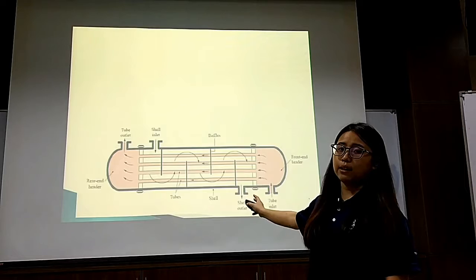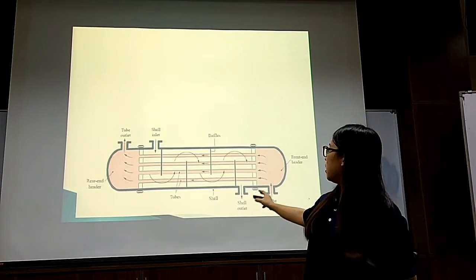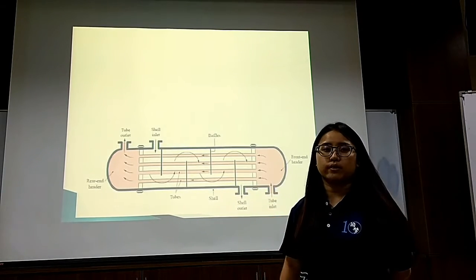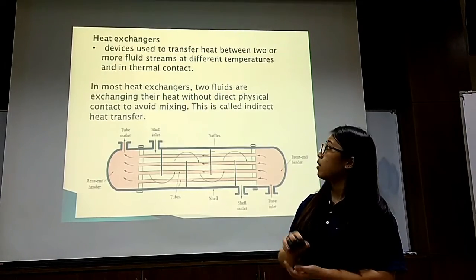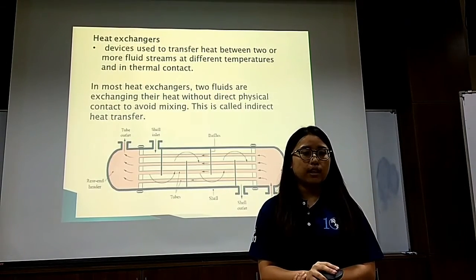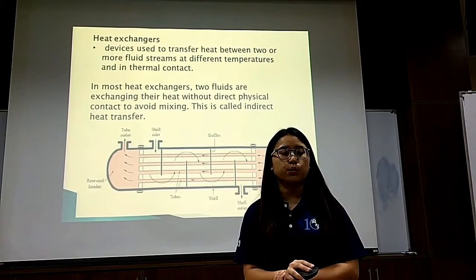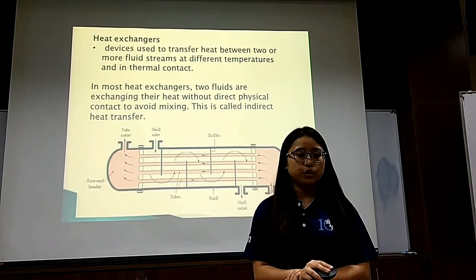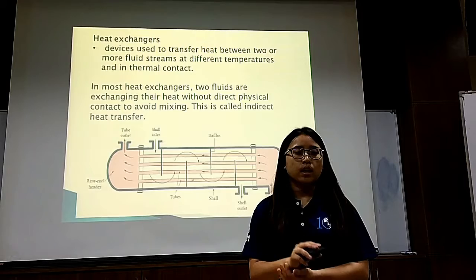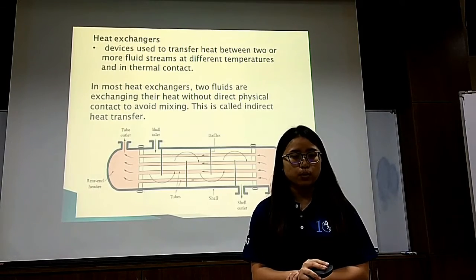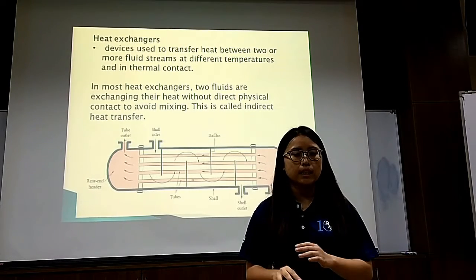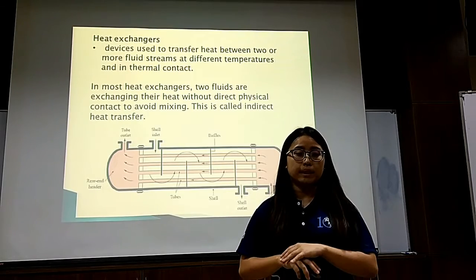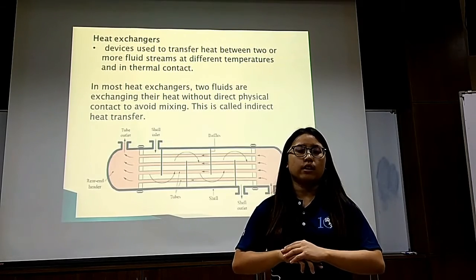We can see the diagram of the heat exchanger — the tubes, the shells, and the baffles are the main components. Heat exchangers are devices used to transfer heat between two or more fluid streams at different temperatures and in thermal contact. In most heat exchangers, the two fluids exchange heat without direct physical contact to avoid mixing. This is called indirect heat transfer.